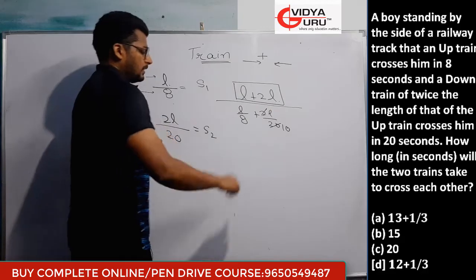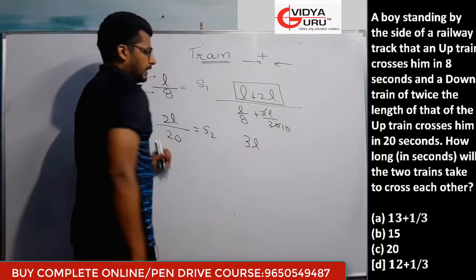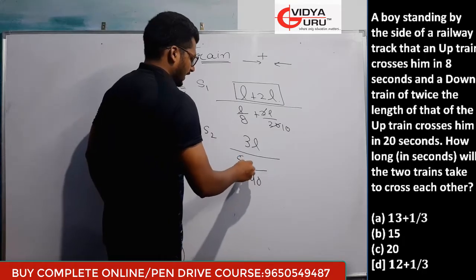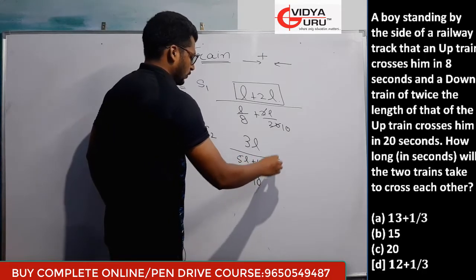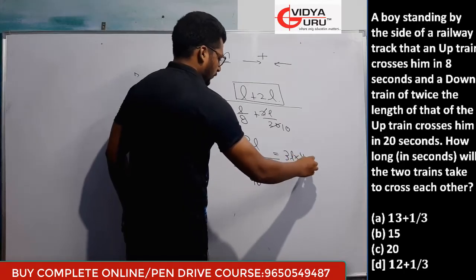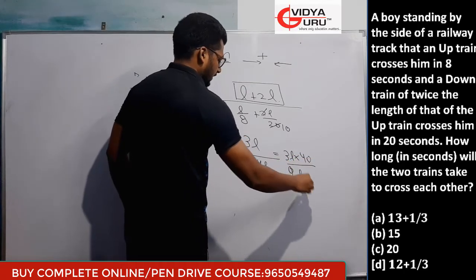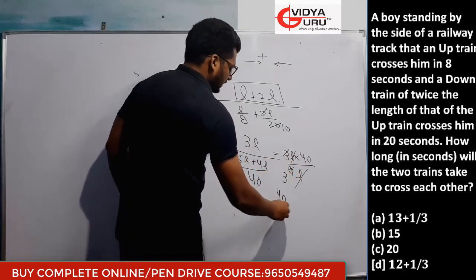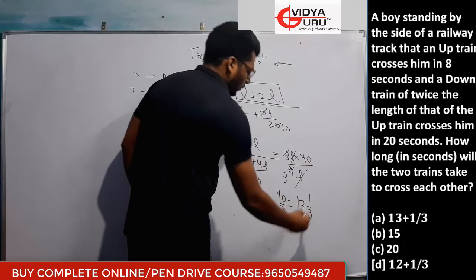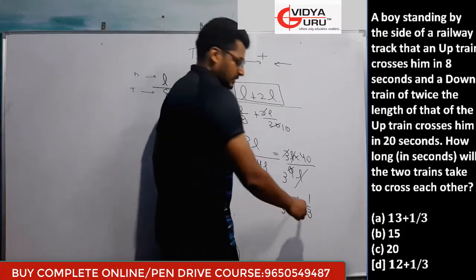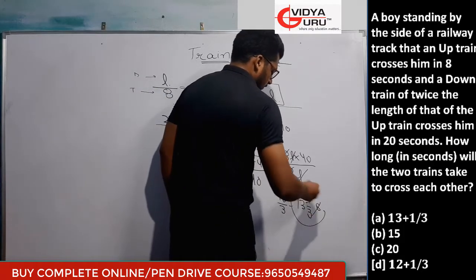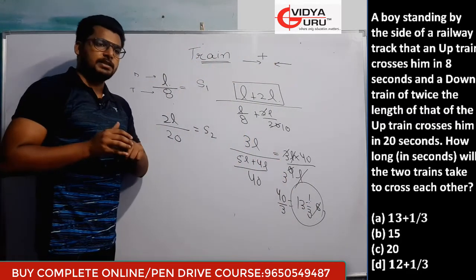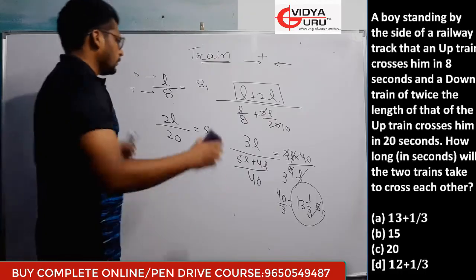When two trains cross each other, they cover the sum of both their lengths. Total distance = L + 2L = 3L. They are moving in opposite directions, so speeds add: L/8 + L/6 = 3L/24 + 4L/24 = 7L/24. But wait — speed = L/8 + 2L/20... Solving: time = 3L / (sum of speeds) = 40/3 = 13⅓ seconds.